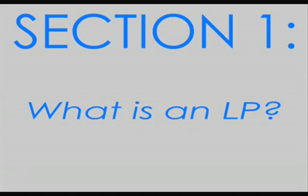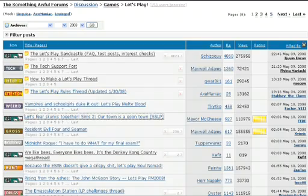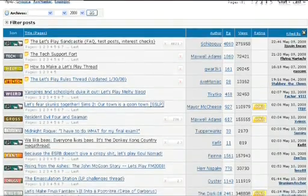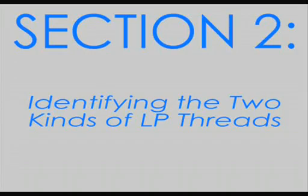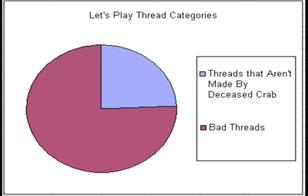Section 1: What is an LP? LPs, which are short for Let's Plays. Section 2: Identifying the two kinds of LP threads. There are two categories of LP threads: threads that aren't made by deceased crab, and threads that are bad. The latter includes upwards of 75% of all LPs ever created.